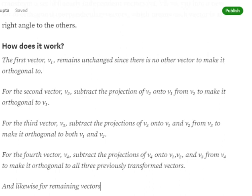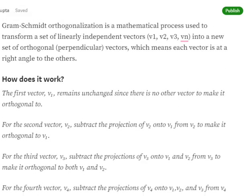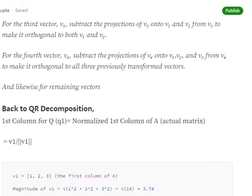We'll be subtracting the projection of v2 onto v1 from v2 to make it orthogonal to v1. For the third vector v3, subtract the projection of v3 onto v1 and v2 from v3 to make it orthogonal to both v1 and v2. Similarly, for the fourth vector, for the fifth vector, for the sixth vector, we need to subtract the projections of that nth vector from its past vectors v1, v2 till vn minus 1, and subtract it from the nth vector to make it orthogonal to all the previous transformed vectors. This will convert them into orthogonal vectors. For orthonormal, we'll be normalizing that.